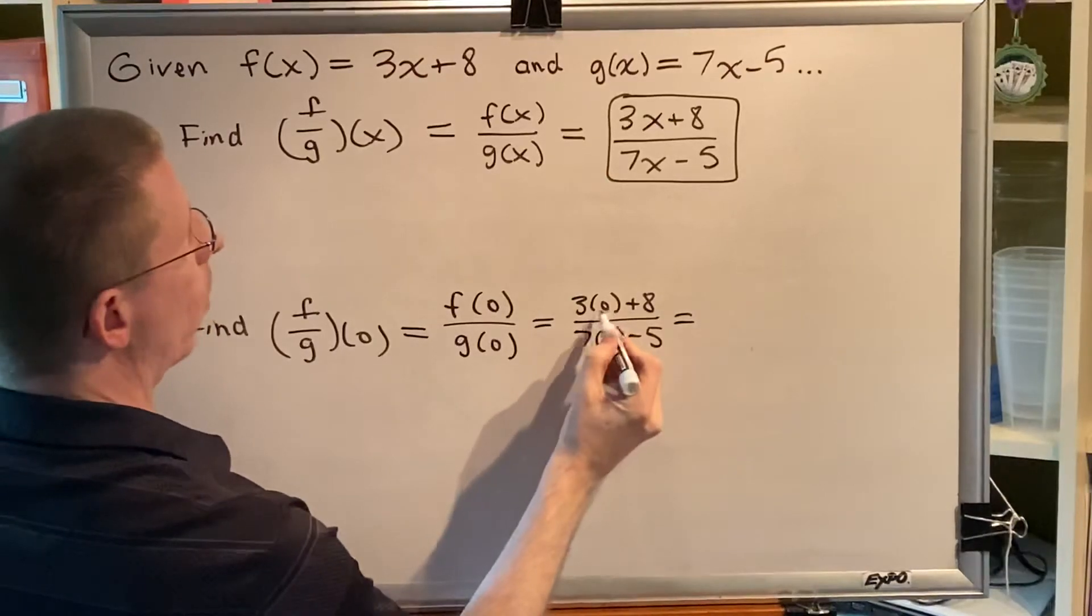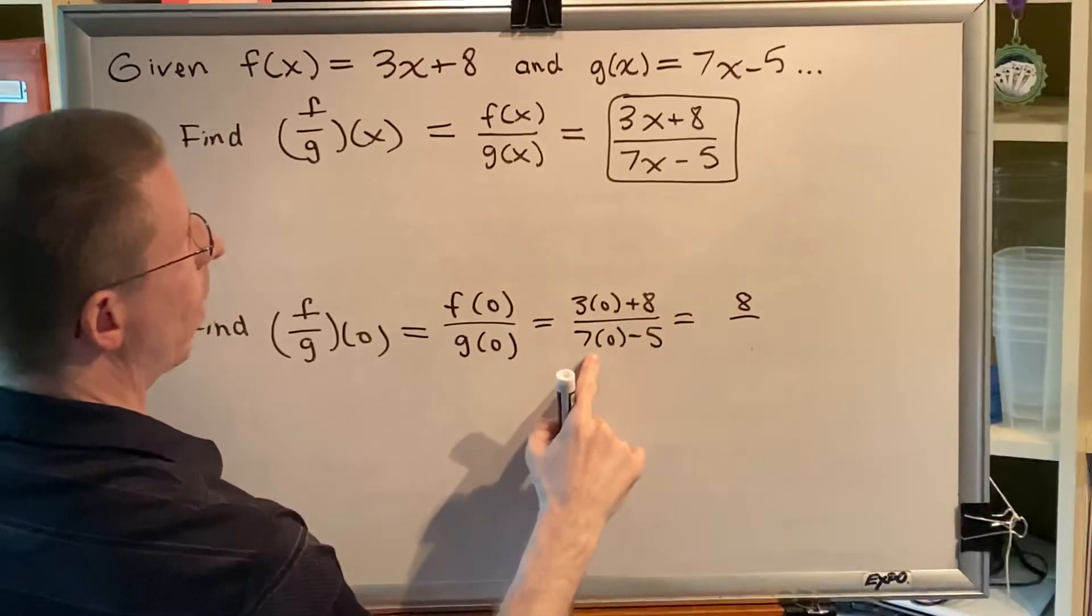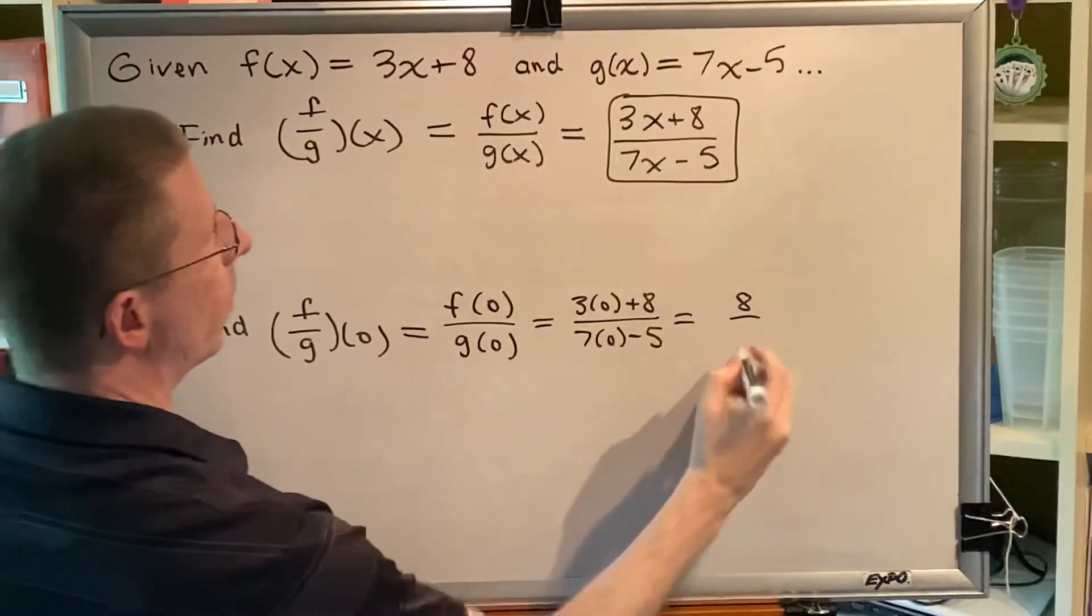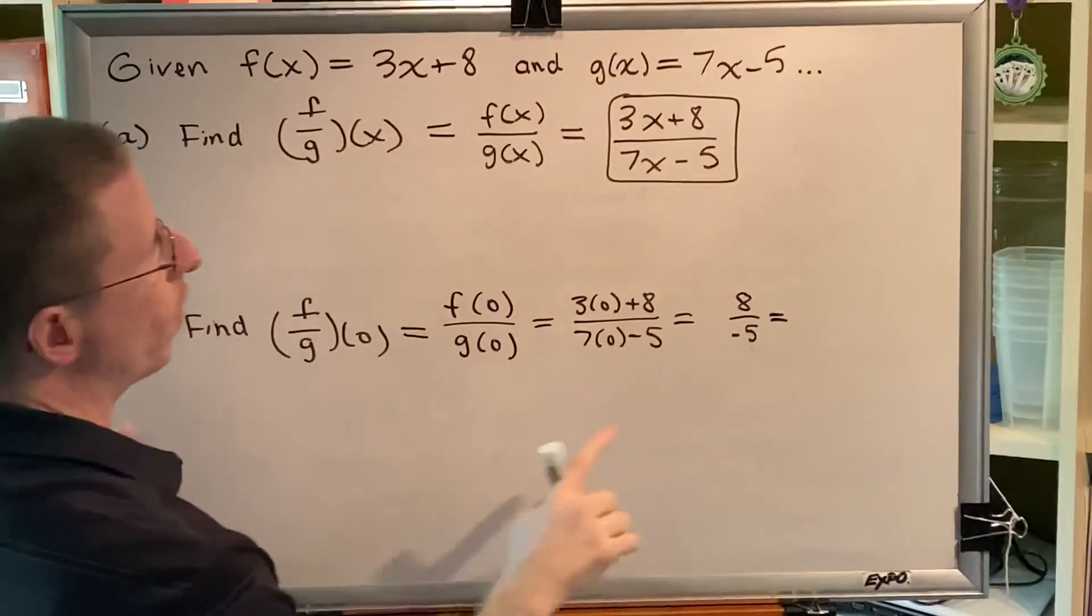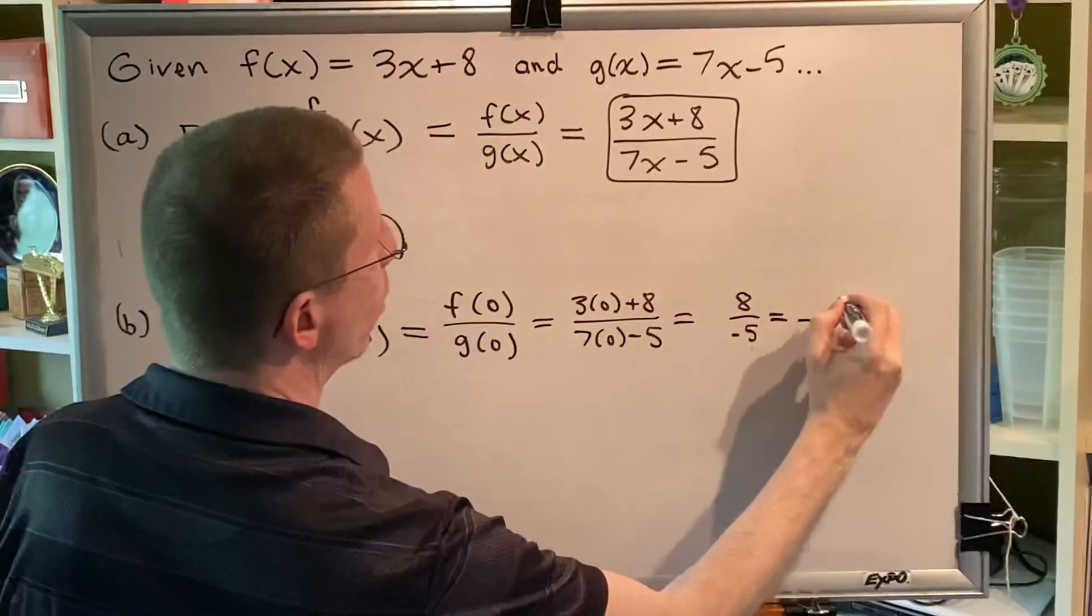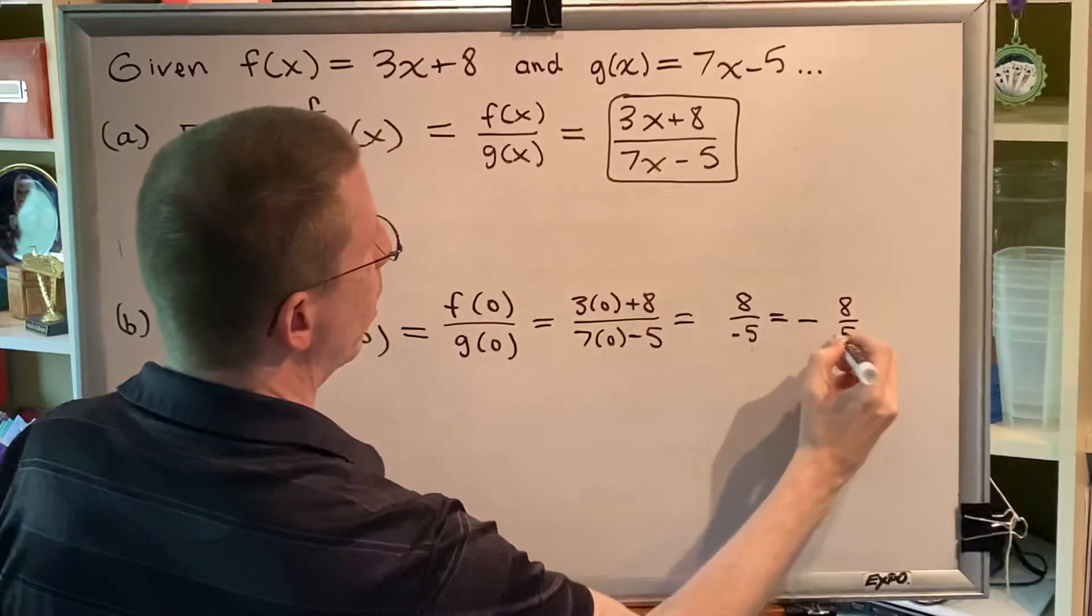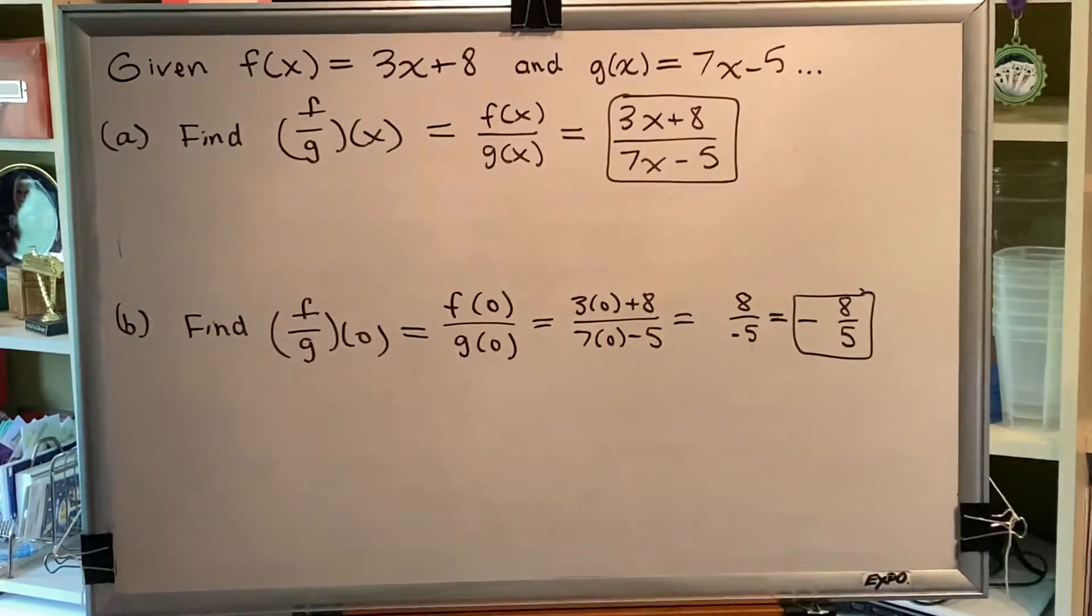So 3 times 0 is 0 plus 8 is 8. 7 times 0 is 0 minus 5 is negative 5. And when a fraction is negative the minus can be with the denominator, with the numerator, or alongside the fraction. As a personal preference I like to put it alongside the fraction. That's the end of this first problem.